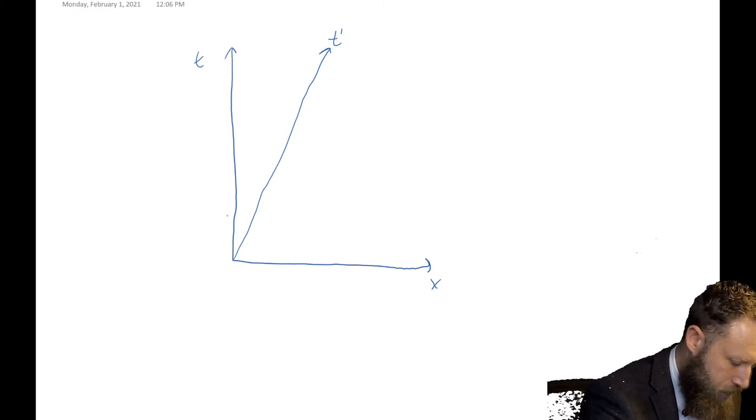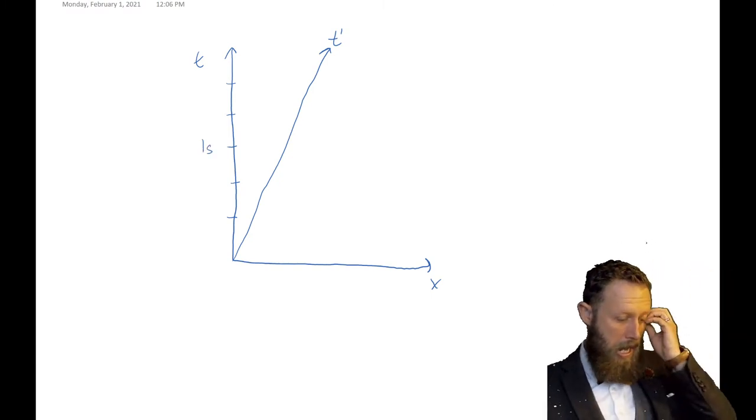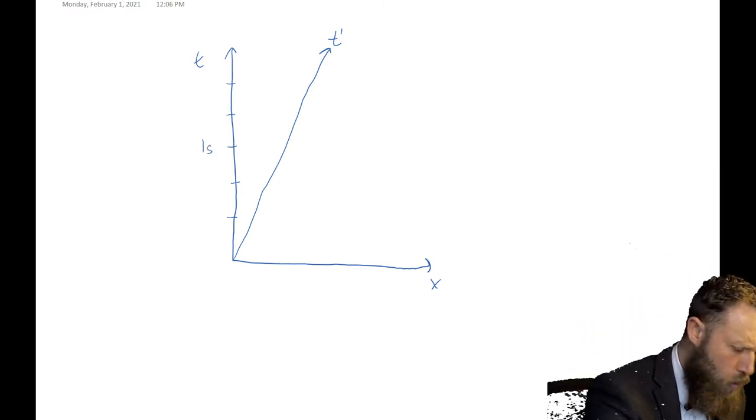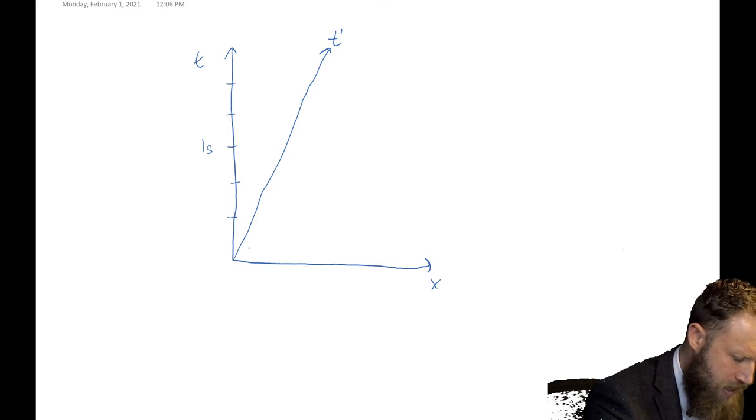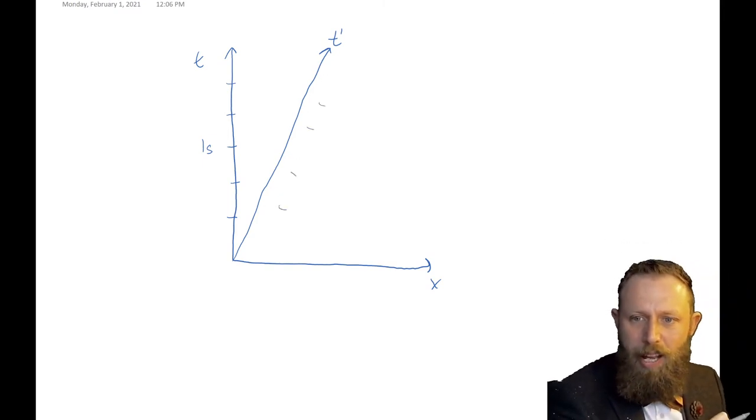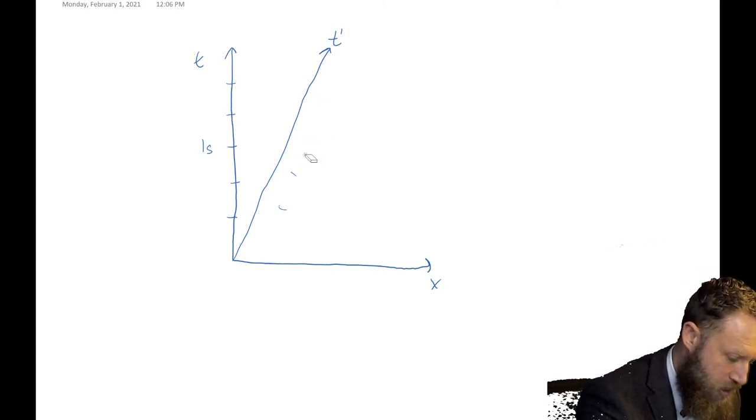But now we want to basically create a way of relating this frame to this frame. What we normally do with our t frame is we put these dashes and we'll say, like this is time equals one second. What we want to know is how do we create the same dashes along that prime axis and put them at the right spacing.